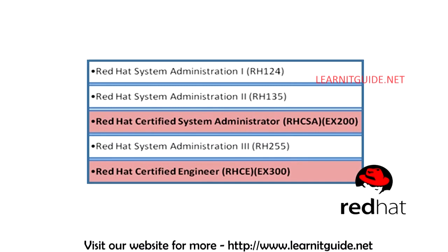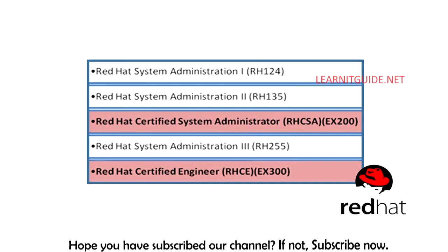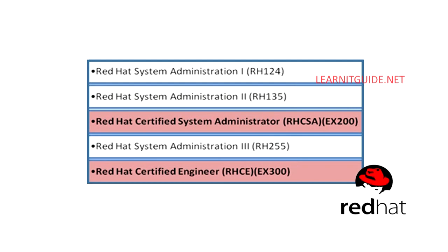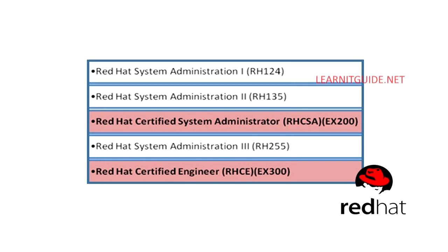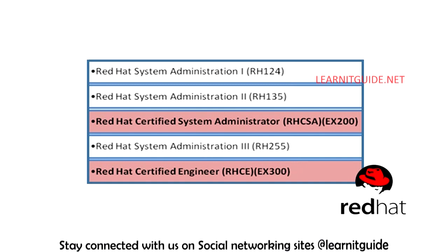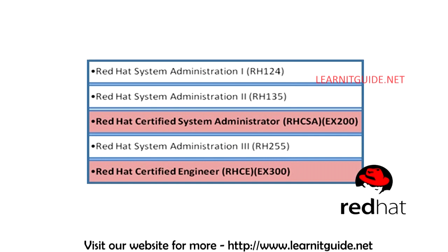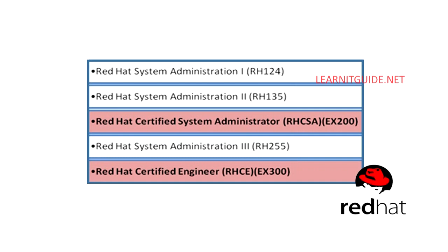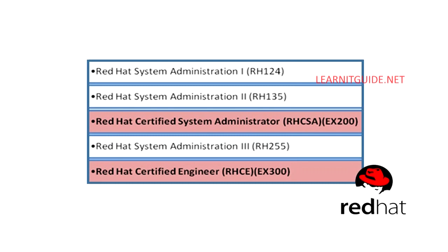We are focusing only on RHCSA and RHCE exams. To become a Red Hat Certified Engineer you need to complete both exams: RHCSA and RHCE. Within RHCSA you have two modules — SA1 and SA2 — and within RHCE you have one module, SA3. To achieve RHCSA certification you have to complete SA1 and SA2. To achieve RHCE you have to complete RHCSA plus SA3.